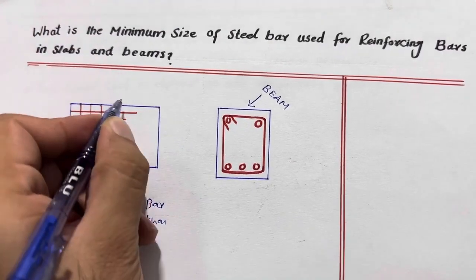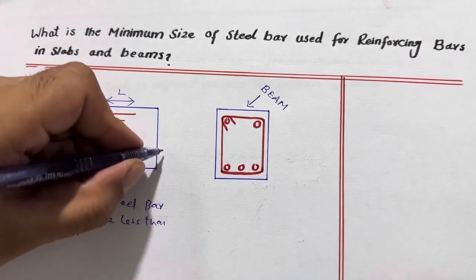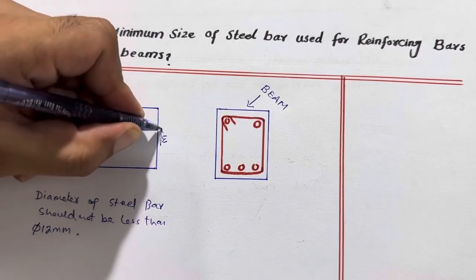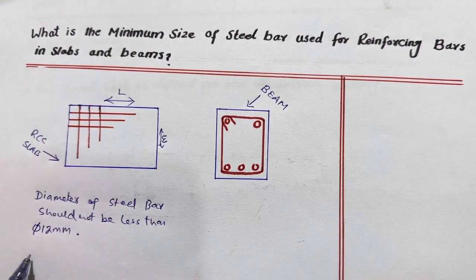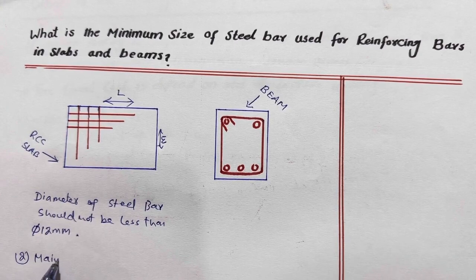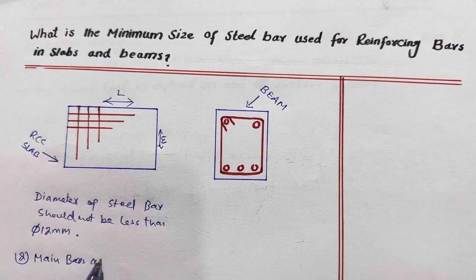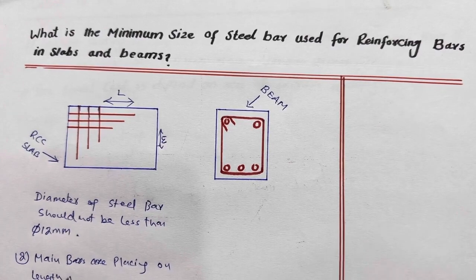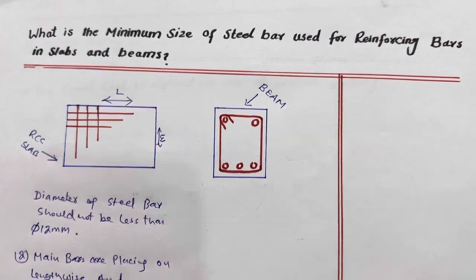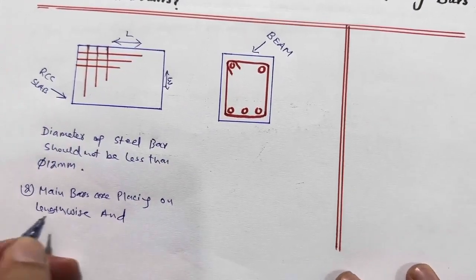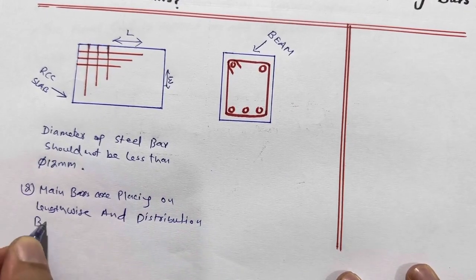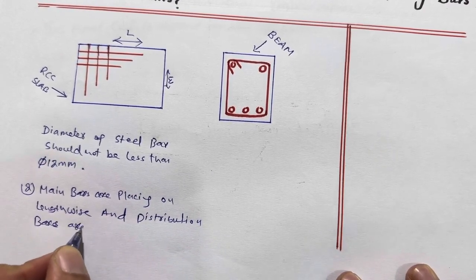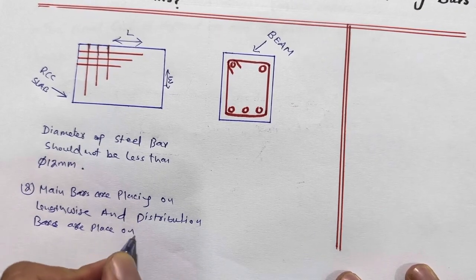Main bars are placed in the length direction — this is the length and this is the width. So when we place the steel reinforcement in the length direction, that is called the main bars. Main bars are placed lengthwise, and distribution bars are placed widthwise.